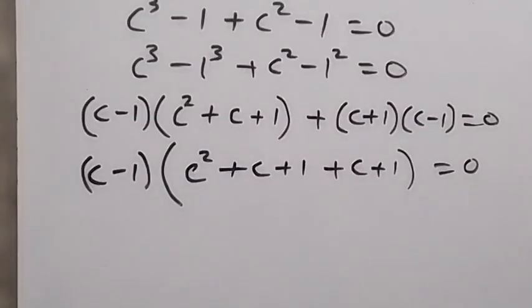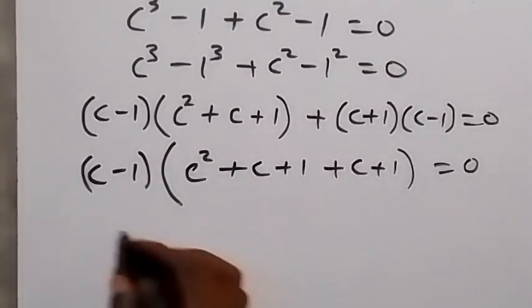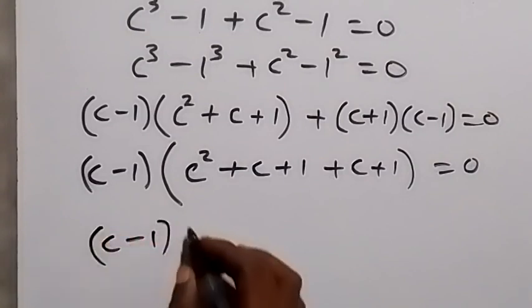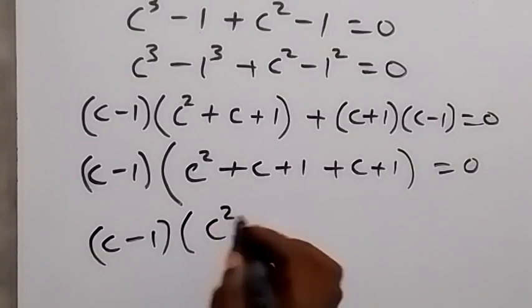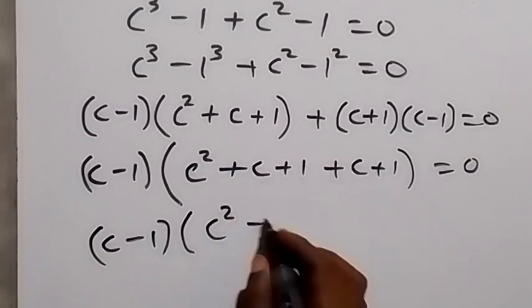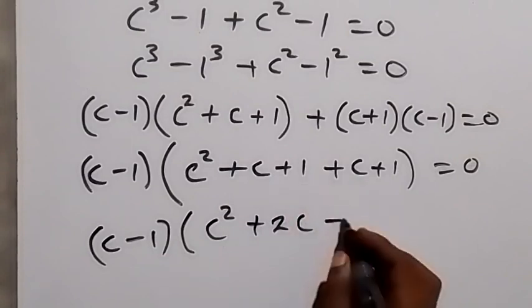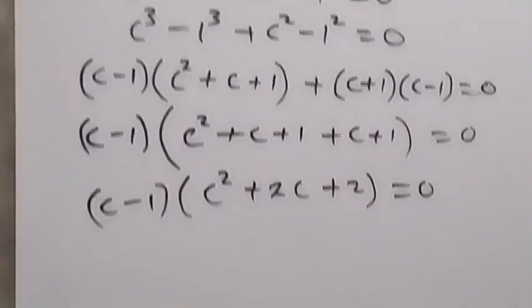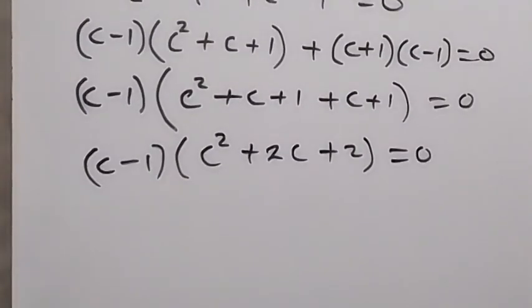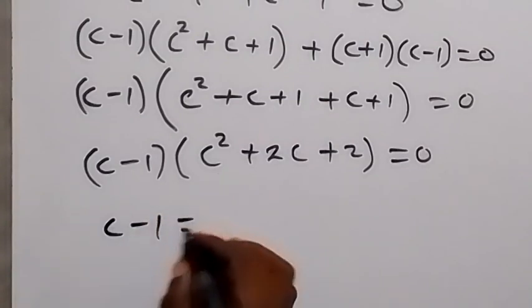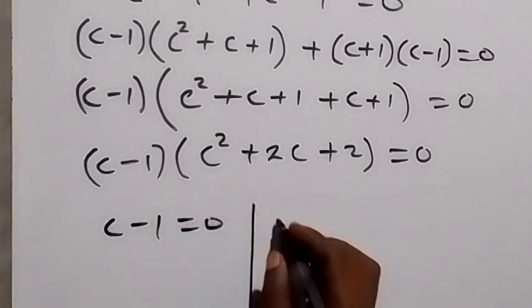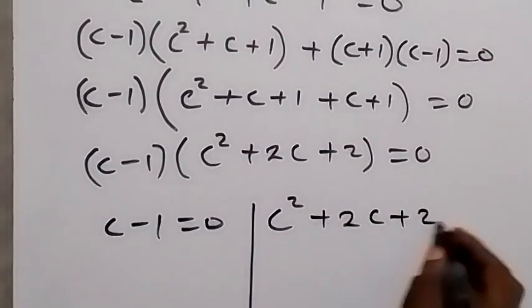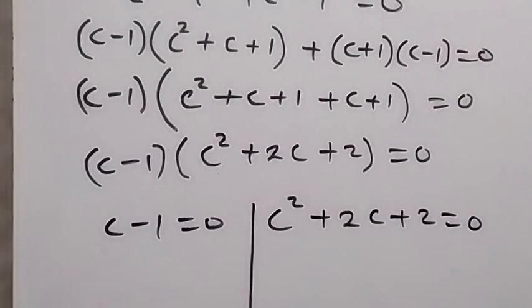When we solve it further, we add what is inside the second bracket. We have (c minus 1) multiplied by (c squared plus 2c plus 2) equals 0. From here we have two possible cases: c minus 1 equals 0, and also c squared plus 2c plus 2 equals 0.